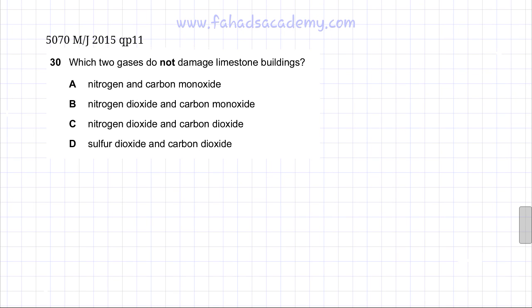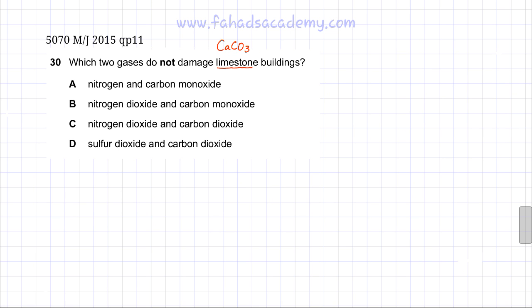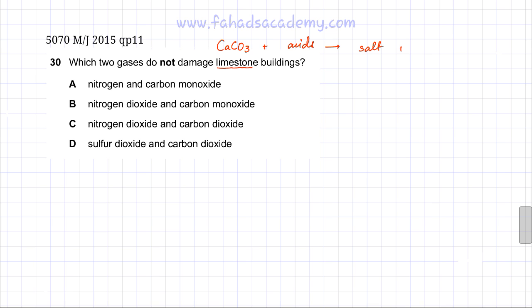The question asks which two gases do not damage limestone buildings. Limestone is mostly calcium carbonate. Calcium carbonate is a carbonate, and carbonates tend to react with acidic substances — they react with acids to produce salt, water, and carbon dioxide.